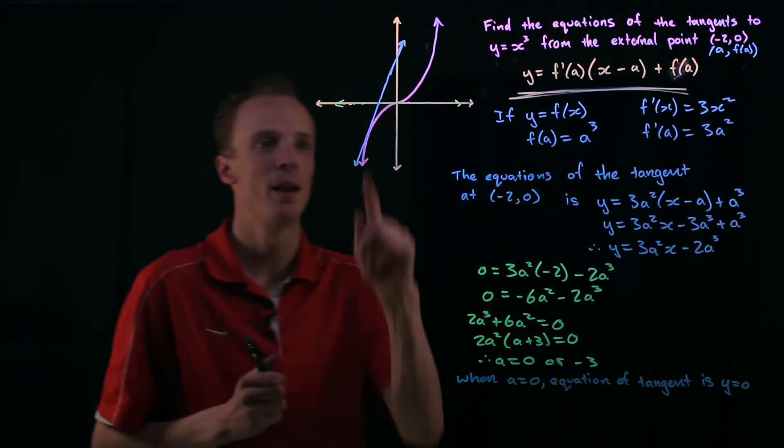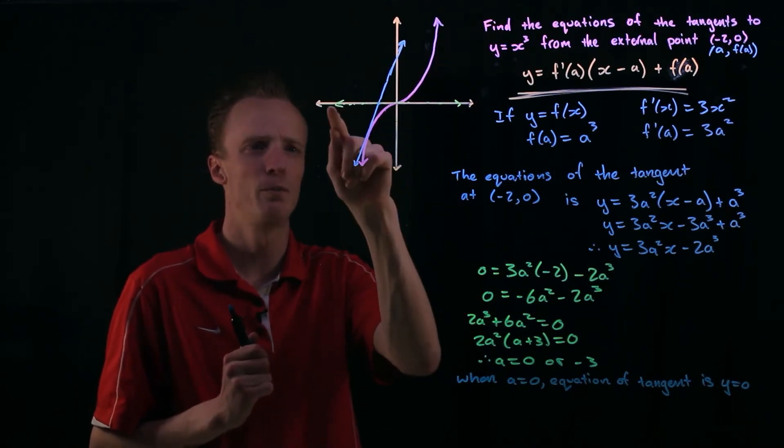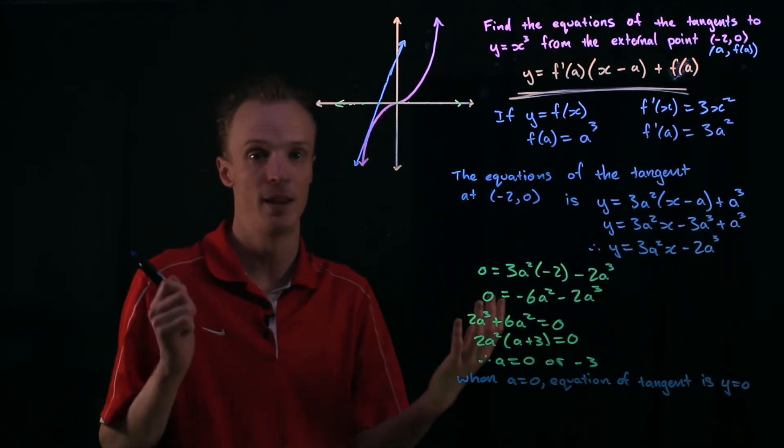Which if you think about back up to our original graph of this we could have probably predicted it because it was the x-axis.